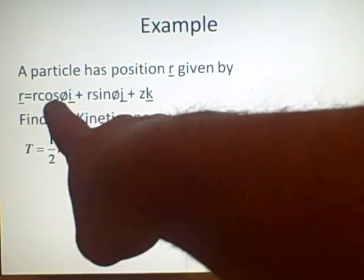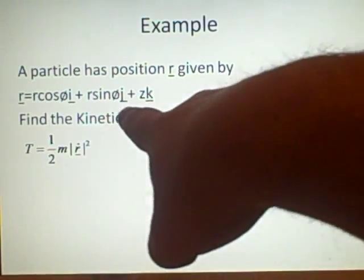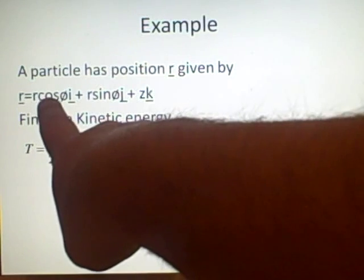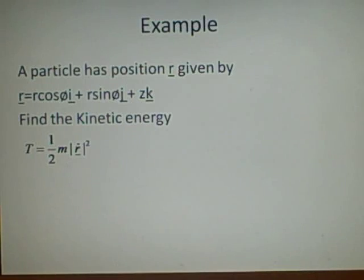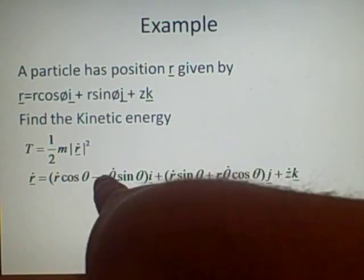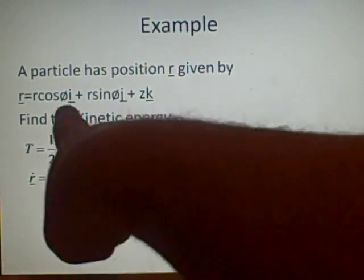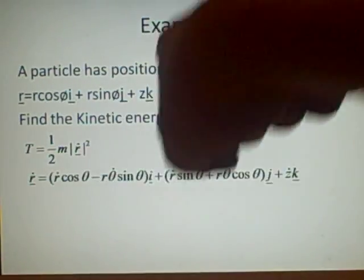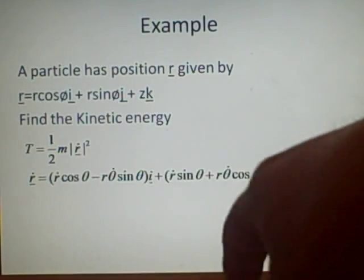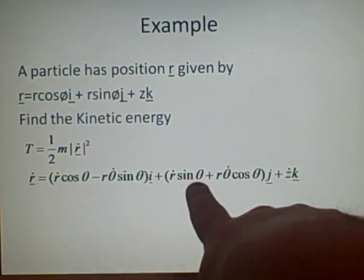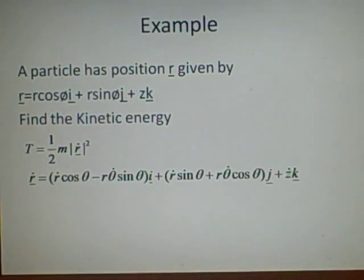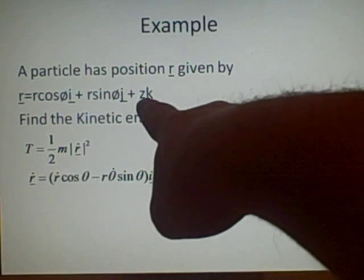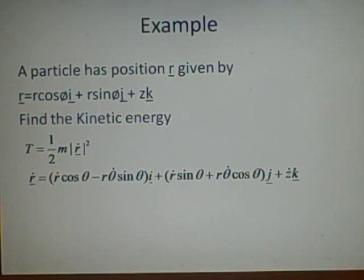If we differentiate R with respect to t, we'll get r-dot times cosine theta — by the product rule — plus minus r sine theta times theta-dot. We do the same for the j component: r-dot sine theta plus r times theta-dot cosine theta. And the z component is straightforward, it just goes to z-dot.